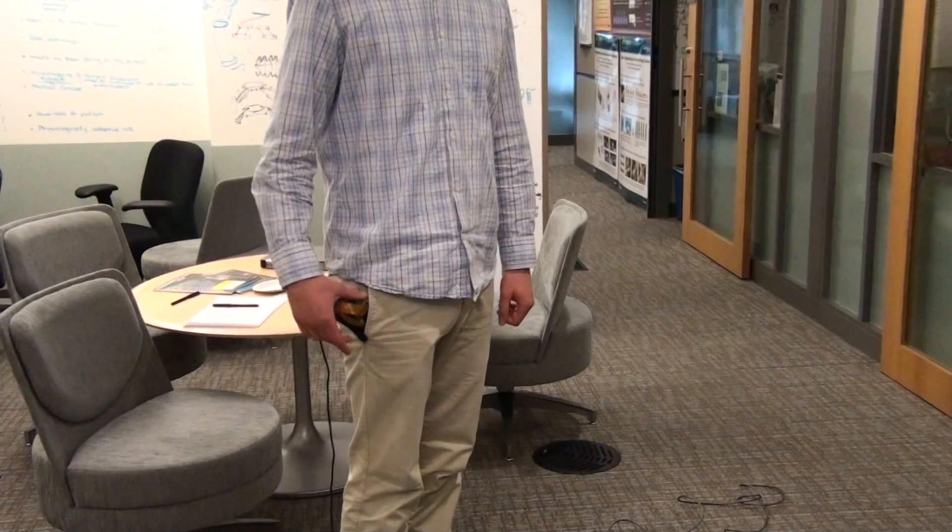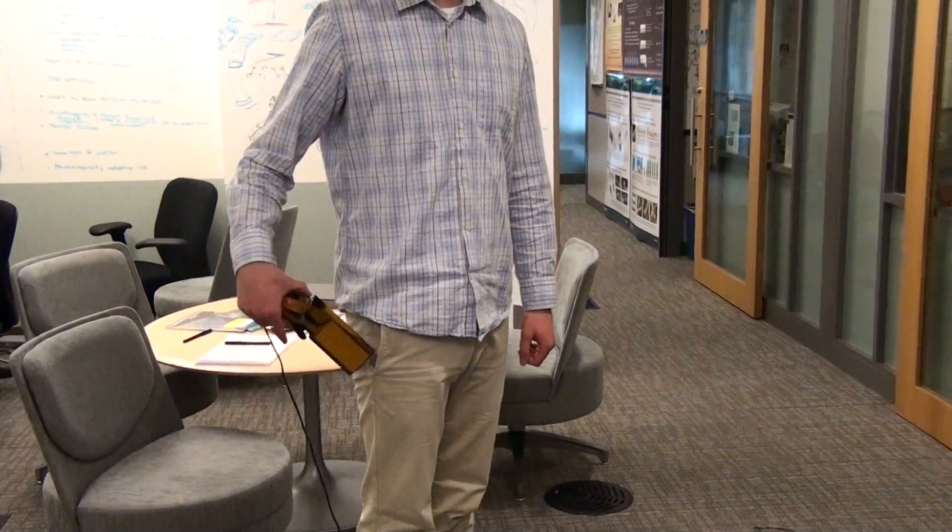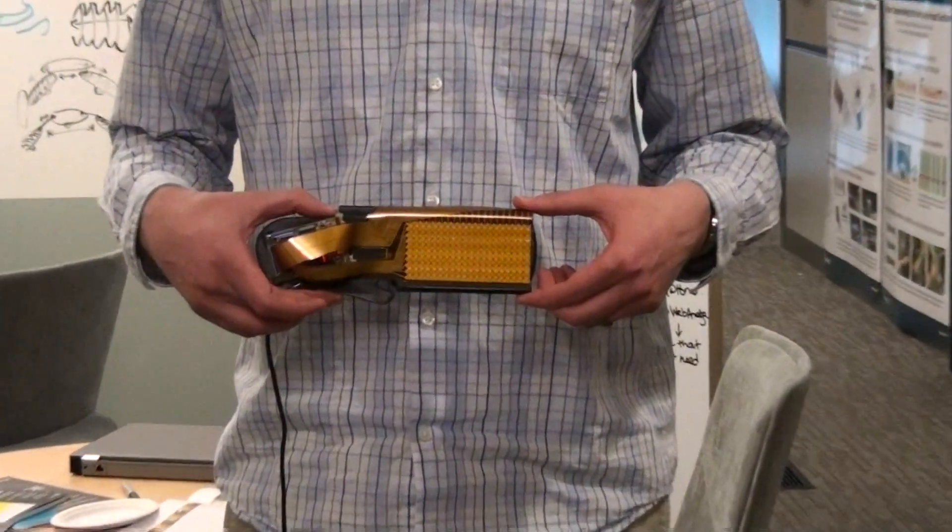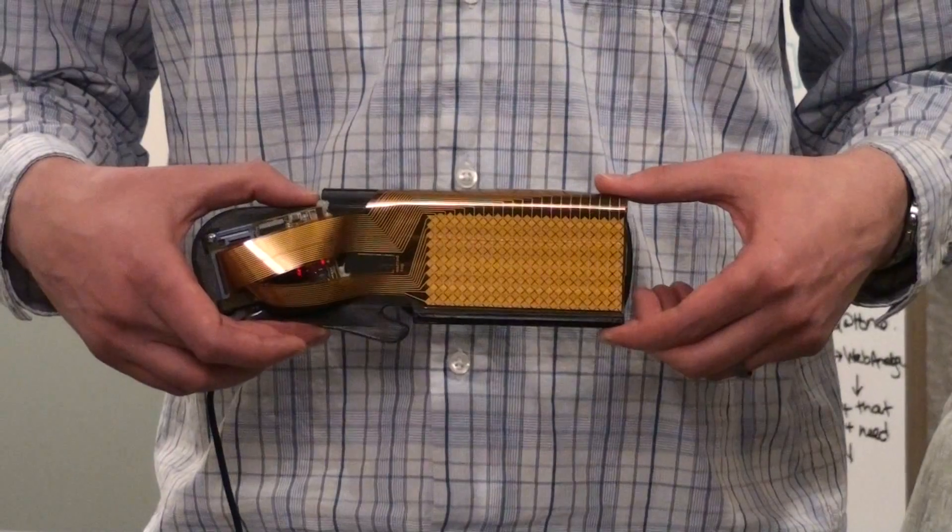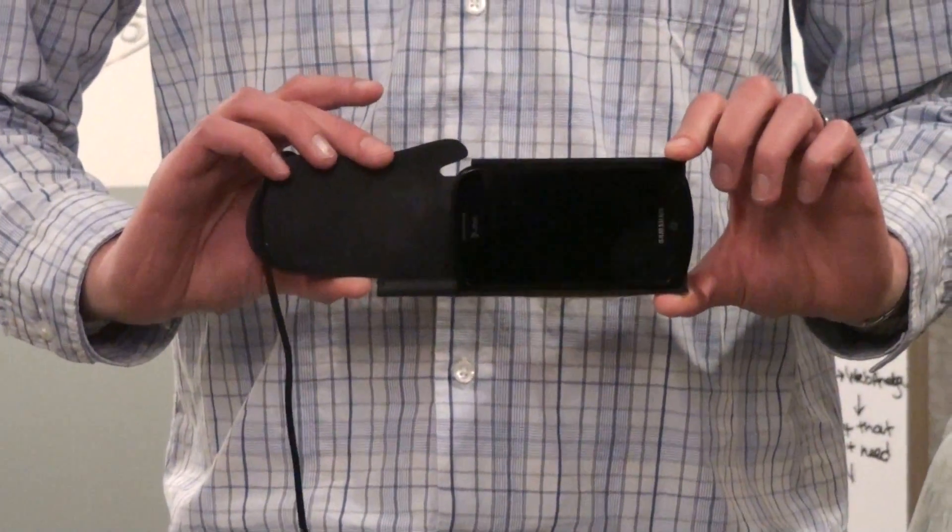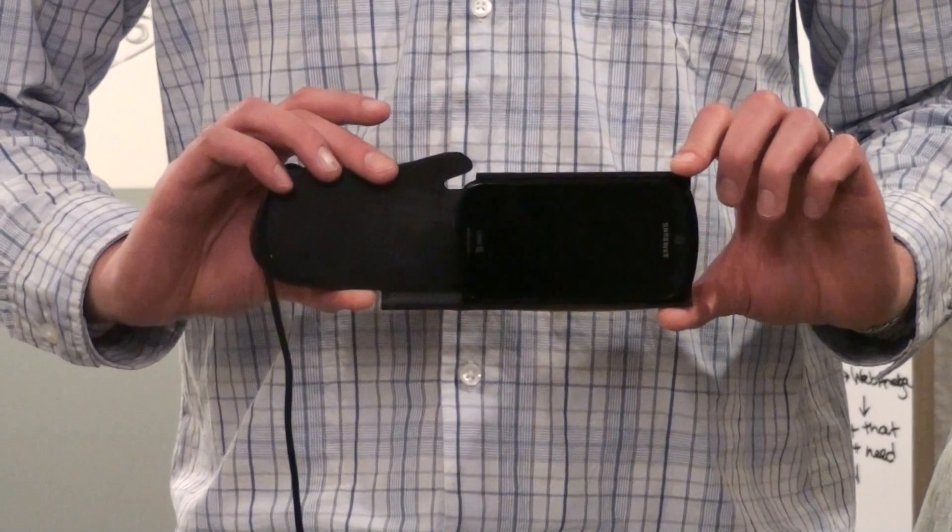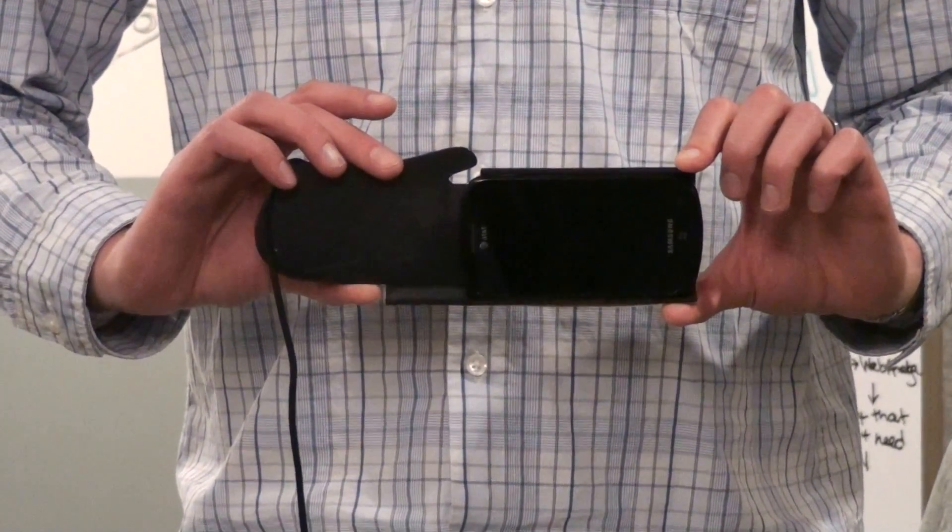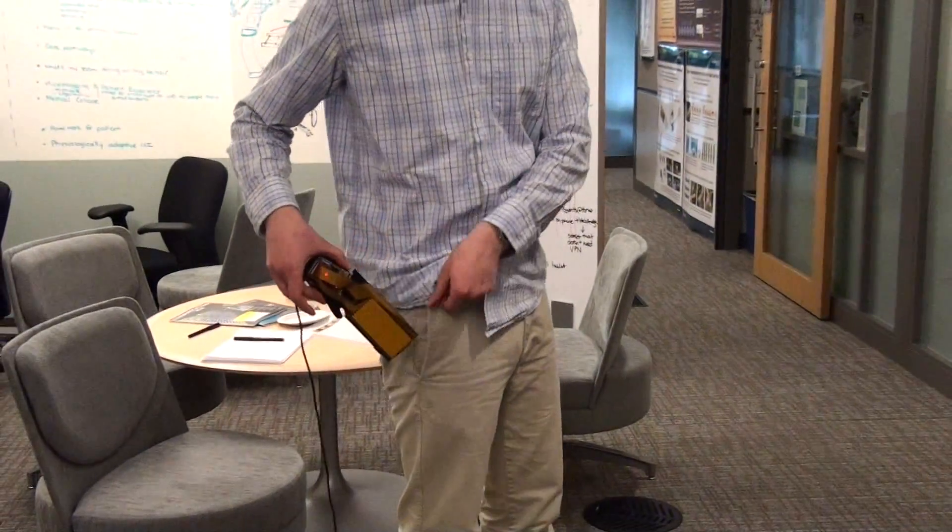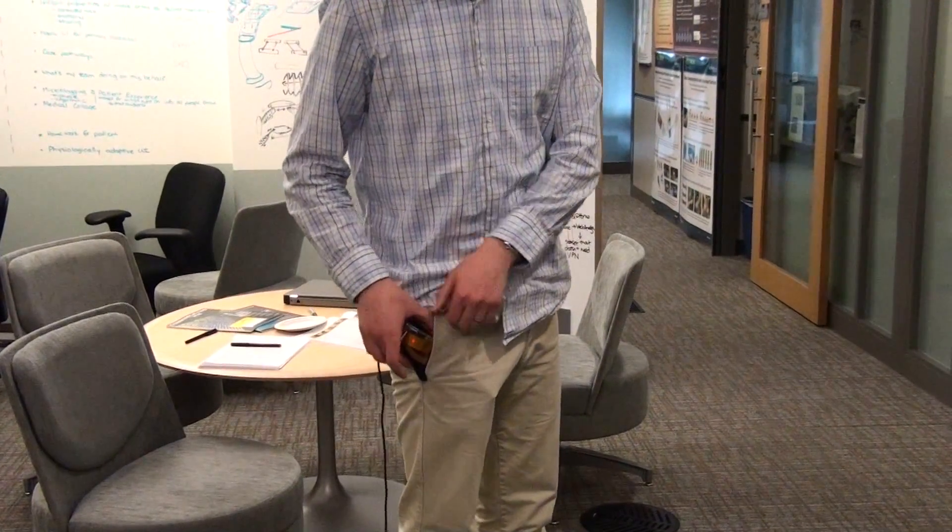Our prototype device consists of a custom capacitive sensor mounted on the back of a smartphone. This custom hardware allows us dynamic control of the sensor signal necessary for detecting finger contacts through material. However, such capabilities could also be enabled using the capacitive sensor already integrated in smartphone screens.